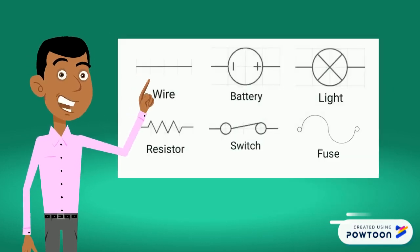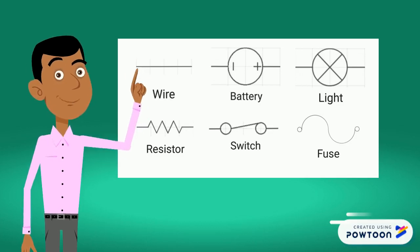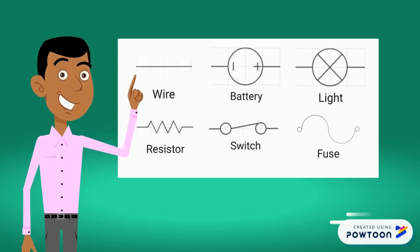These symbols that you can see on your screen are the basic circuit elements such as wire, battery, light, switch, resistor, and fuse that we will be encountered during our discussion.